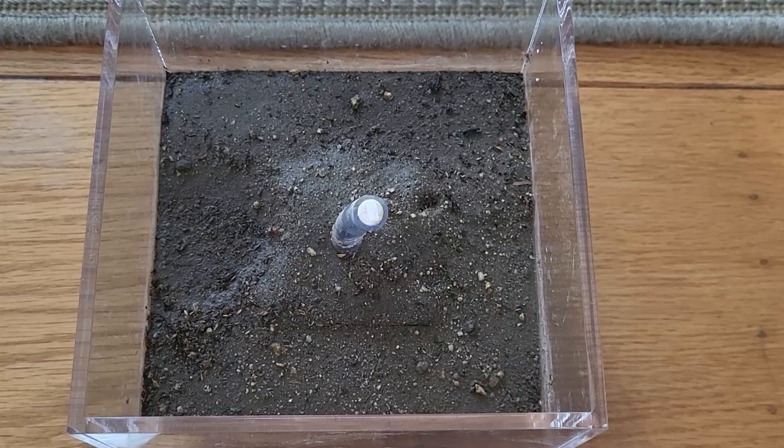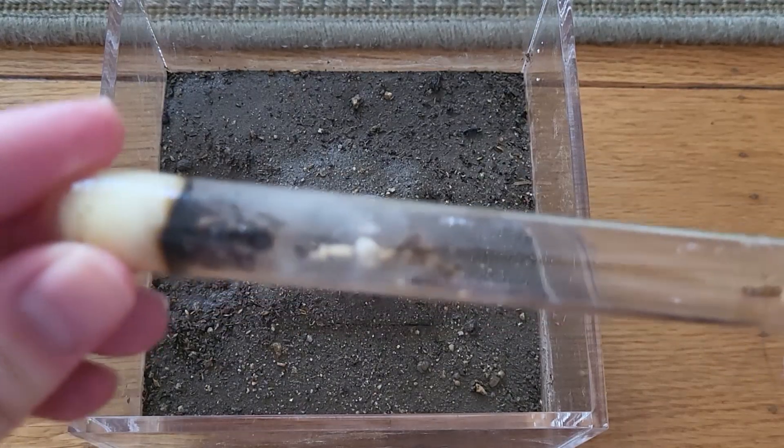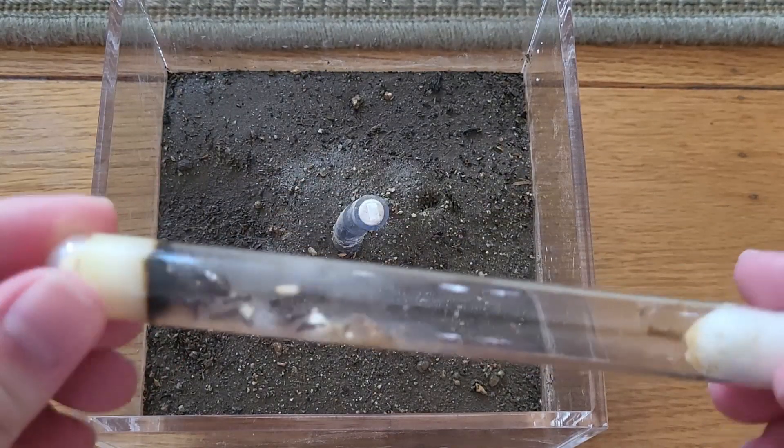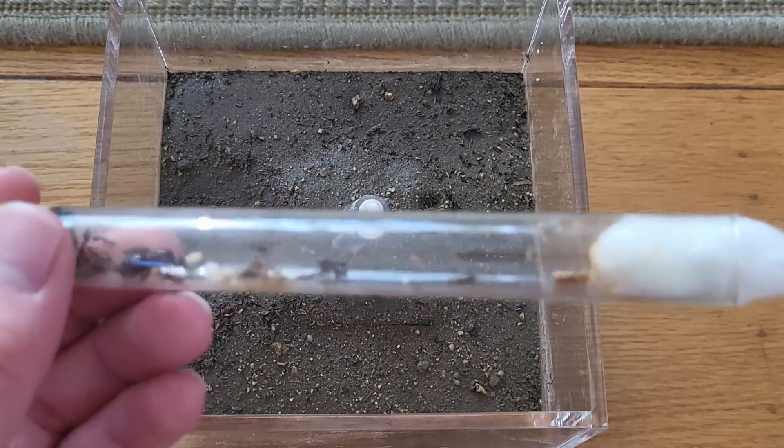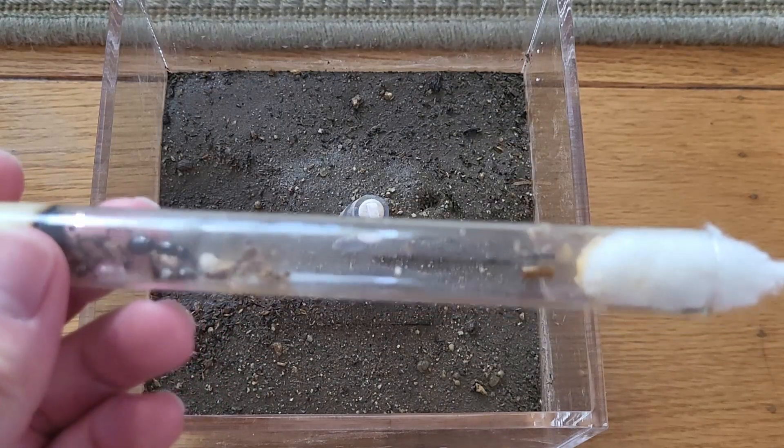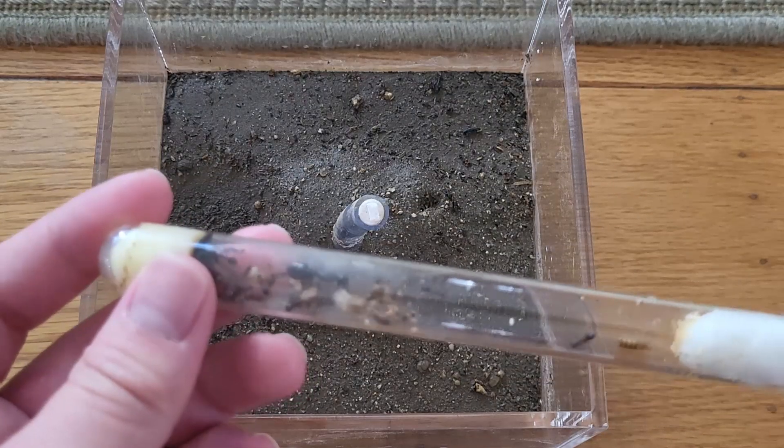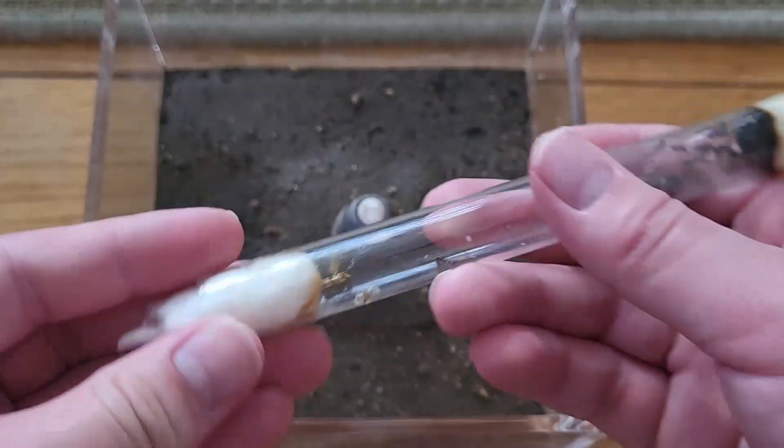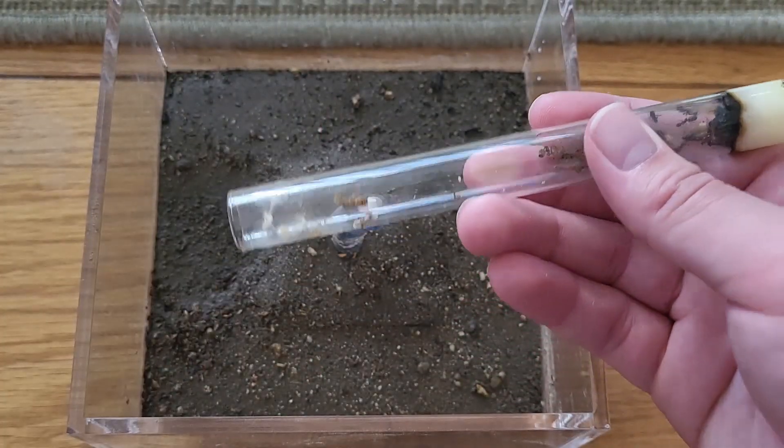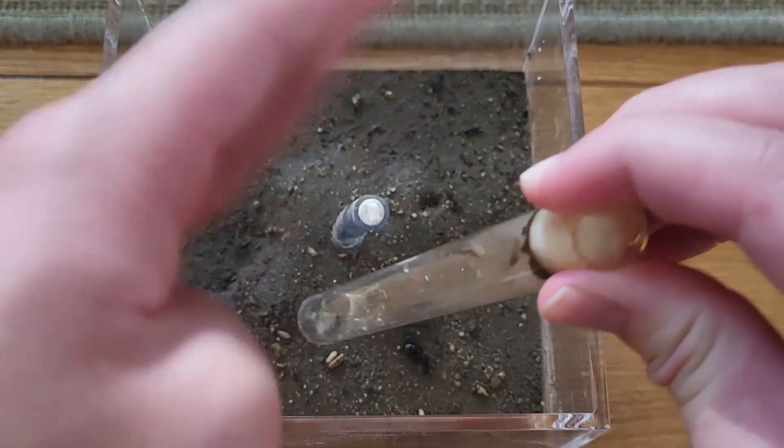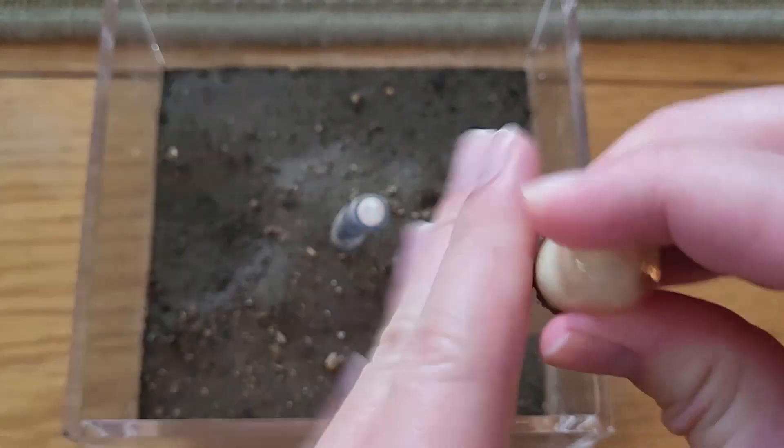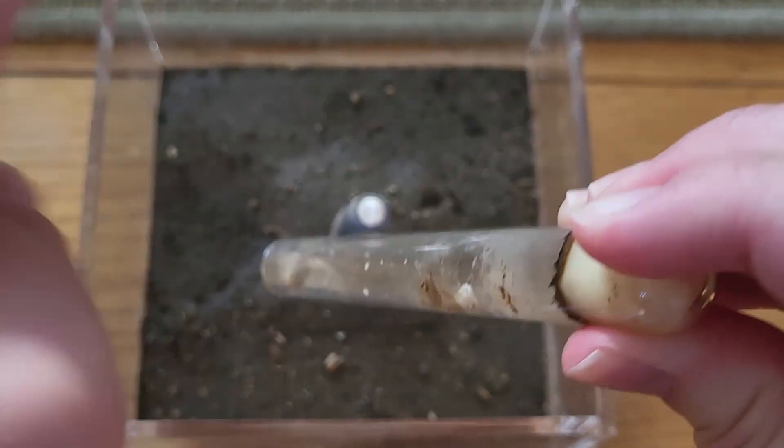Now I will dump my carpenter ant colony in there. This is a Camponotus Maritimus colony. Basically they're like your normal carpenter ant except they're very frantic and they go nuts, as you can see. I'm just opening the tube and dumping them, but they should be fine. Honestly they'll dig and then they'll be happy again.